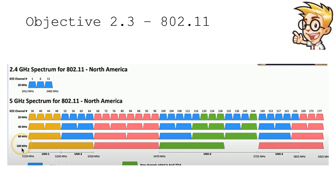So we started using the 5 gigahertz spectrum. Everything on the 5 gigahertz list that is not marked red can be used to communicate. As you can see, there are many more 20 megahertz channels available on the 5 gigahertz spectrum than on the 2.4 gigahertz. This allows you to easily find available spectrum in your area, especially if there are a lot of access points being used simultaneously.